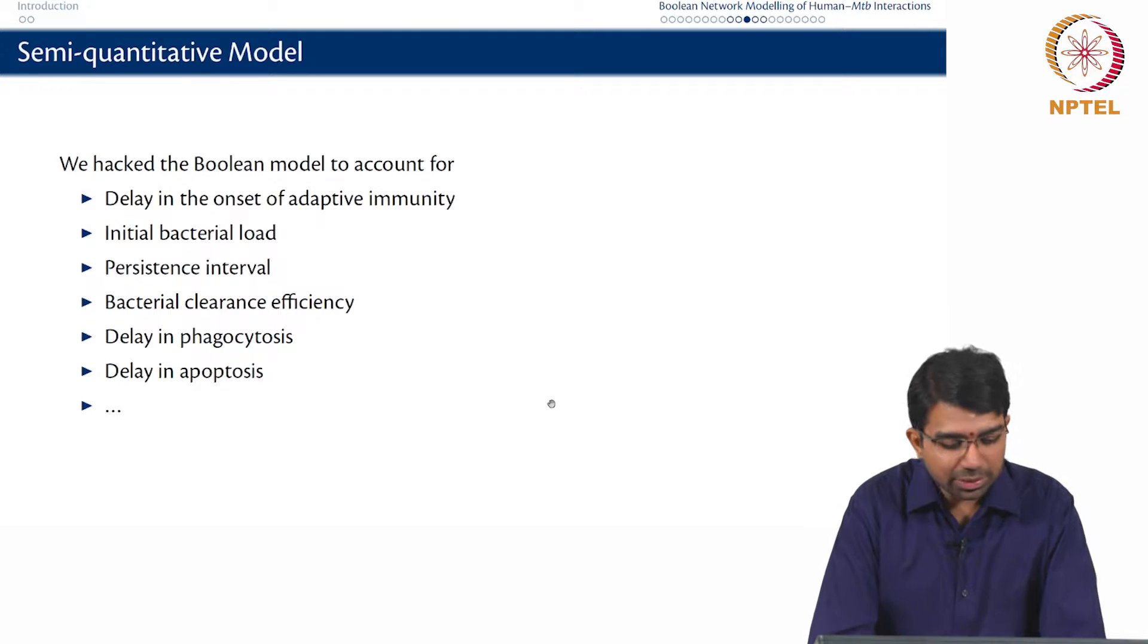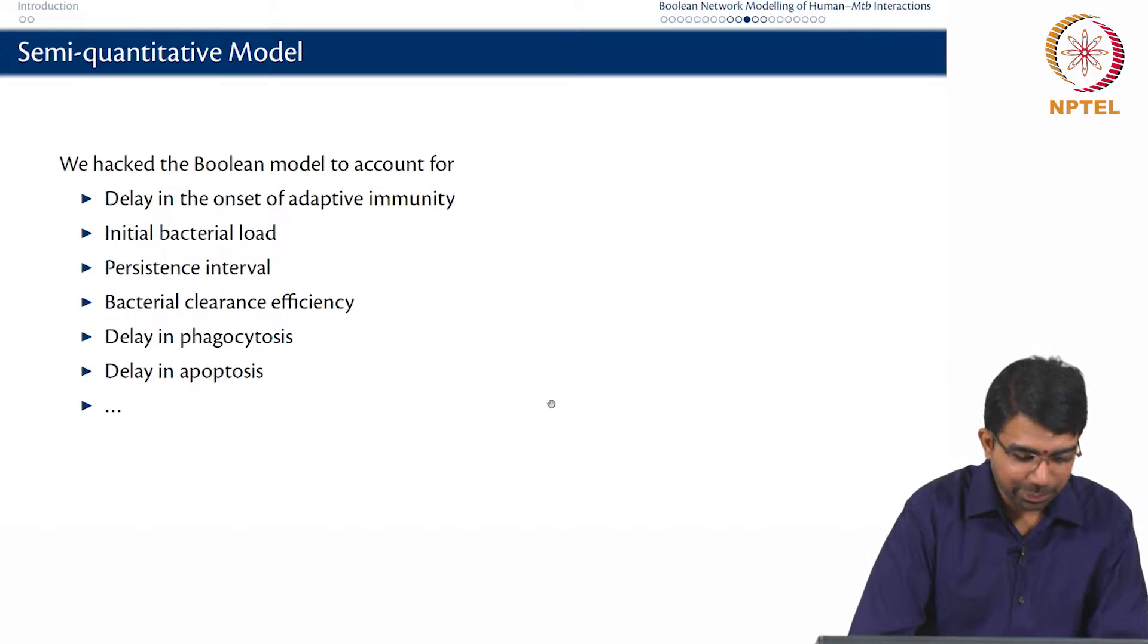So we also tweak the Boolean model to account for delay in the onset of adaptive immunity. You have an adaptive immune system but that never kicks off on day 0. It kicks off only after some punishment has been received from the bacterium. And what is the initial bacterial load? When does persistence set in? How efficient are we clearing the bacterium? This can depend on drugs and so on. And is there a delay in phagocytosis, apoptosis and so on and so forth.